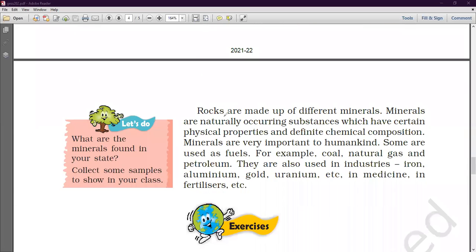Then, we have told that rocks are different. There are different minerals. Minerals are natural. There are certain physical properties. Minerals are natural substances that are already present. So, their properties, their chemical composition are also very different. And, minerals are important in humankind. For example, we have a fuel. So, coal, natural gas and petroleum are also important.